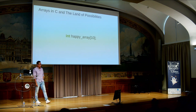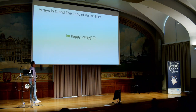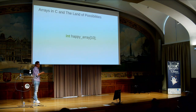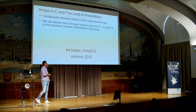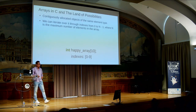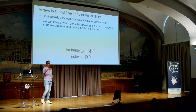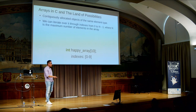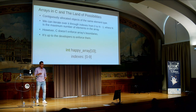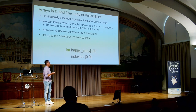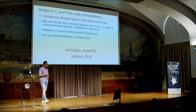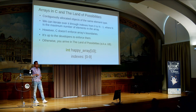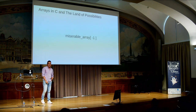This is probably the most simple declaration of an array in the C language. Here we have a happy array that is going to hold 10 elements of type integer. Arrays are quite useful because it's useful to have a consecutive sequence of objects to iterate over or copy data from. The problem is the language doesn't enforce the boundaries of these objects — it's always up to the developers to take care of that. Otherwise, we land into what I like to call the land of possibilities, which is of course undefined behavior. This is an example of a miserable array.